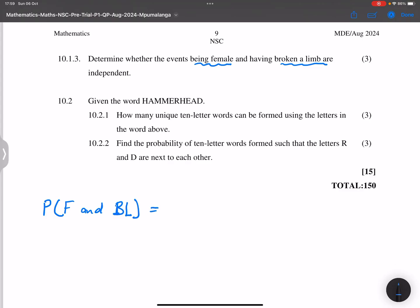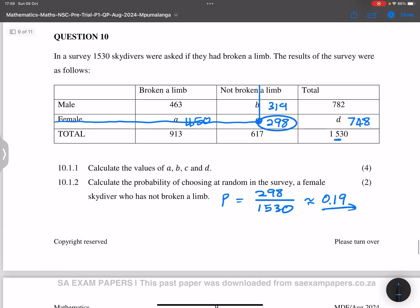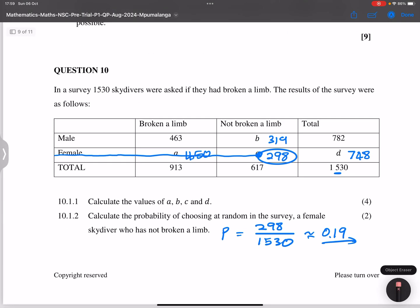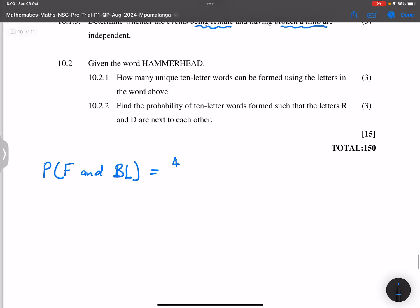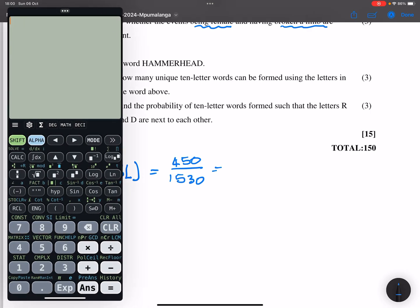So firstly, let's look at that one. So females that have broken a limb. So we said females that have broken a limb, that's 450 over 1530. So we're looking for that independently, 450 divided by 1530. And that gives us 0.29.